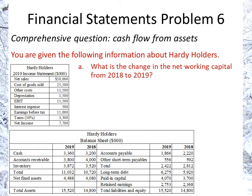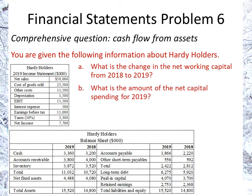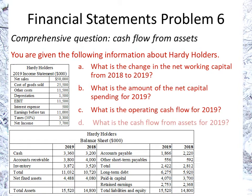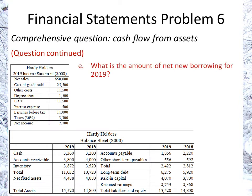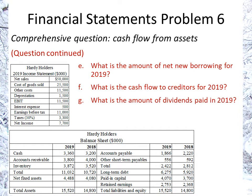You are to calculate the following: the change in net working capital from 2018 to 2019, the amount of net capital spending for 2019, the operating cash flow for 2019, and the cash flow from assets. Then also: the amount of net new borrowing for 2019, the cash flow to creditors, the amount of dividends paid, and the cash flow to stockholders — all for 2019.